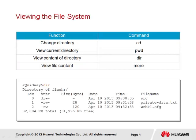The file system houses the files used by the device within directories within the device's local storage. The file system can be managed through various commands that allow files to be created, deleted, modified, or even renamed, as well as allow the contents of a file to be viewed. We show here the main commands that should be used to view and navigate the file system hierarchy.